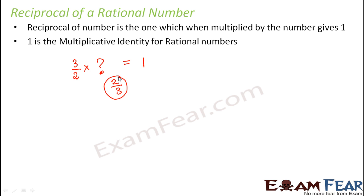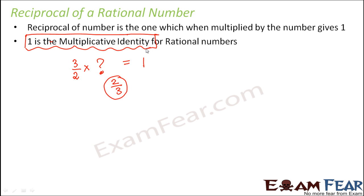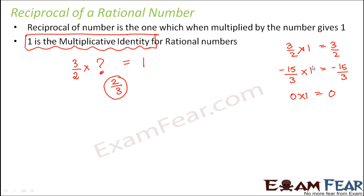Think of the number 2/3. If you multiply 2/3 with 3/2, you get 1. So 2/3 is called the reciprocal of 3/2. Now why does this concept of reciprocal exist? That's because 1 is the multiplicative identity — just like 0 is the additive identity, meaning adding 0 to a number keeps it the same, multiplying 1 by a number keeps it the same. For example, 3/2 times 1 is 3/2, minus 15/3 times 1 is minus 15/3, 0 times 1 is 0.